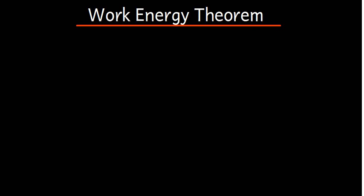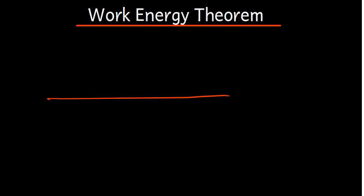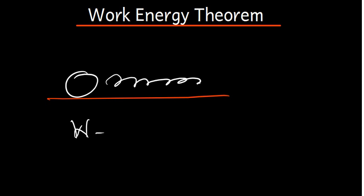So let's assume we have got an object that is moving. If this object is moving, they are saying that all the forces which are acting on this object are supposed to be equal to the change in kinetic energy. As it is moving, there is kinetic energy, so there is a change in kinetic energy. The work done is going to be equal to the change in kinetic energy, and we know that the change in kinetic energy is the kinetic energy final minus the kinetic energy initial.